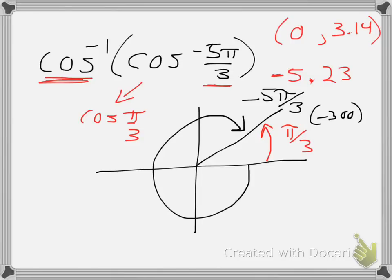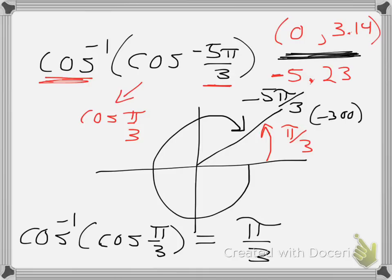And it's positive since we're in the first quadrant. So really, what this is saying is what is the inverse cosine of cosine of π over 3? Since π over 3 does fall within our domain, our answer is π over 3.